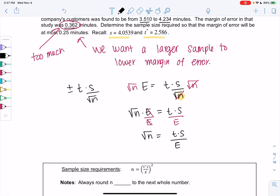So we get the square root of N is T times S over E. And then to get rid of a square root, you can square both sides. And you'll see I wrote that formula below.